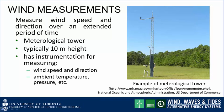The short answer is that we make measurements. Specifically, we measure wind speed and direction over an extended period of time. A meteorological tower, an example of which is shown in the illustration, has instrumentation for measuring wind speed and direction, ambient temperature and pressure, and other parameters of interest to weather forecasters. The standard height for a meteorological tower is 10 meters, so most weather data is for this height.